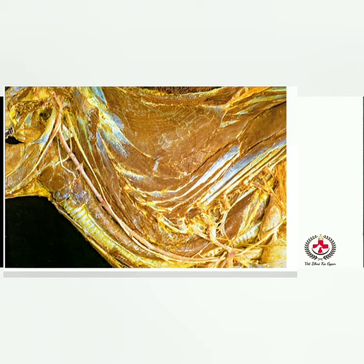Along with the esophagus run: the longus colli muscle, vagosympathetic trunk, common carotid artery, and jugular vein. In the thorax, entering through the thoracic inlet toward the tracheal bifurcation, it enters the mediastinum — first going to the right of the median plane, then forward and back.